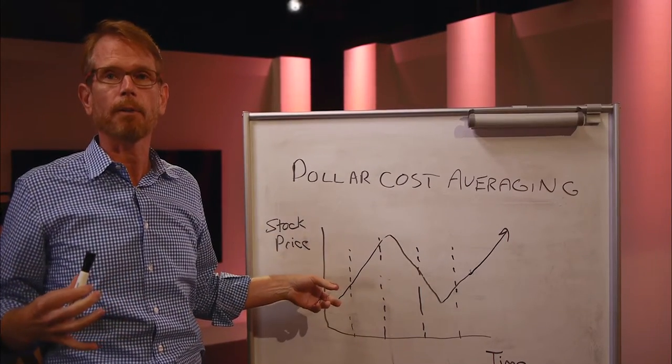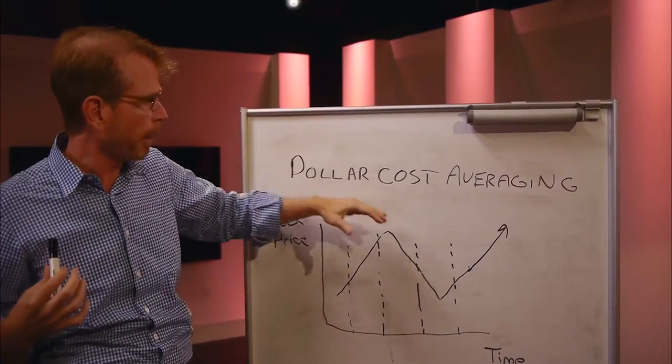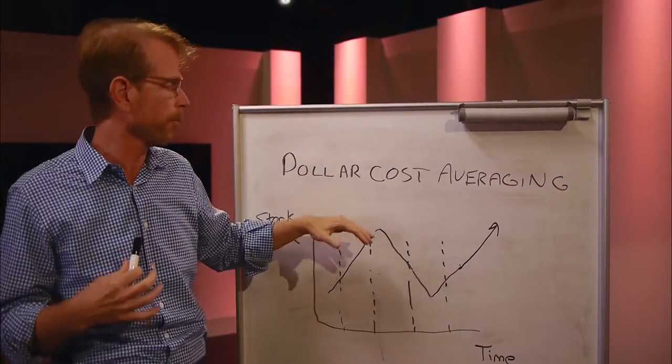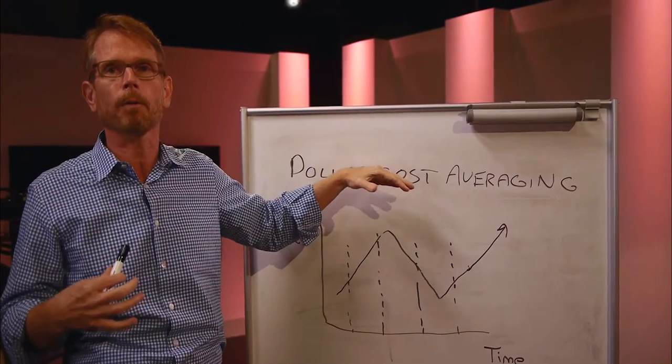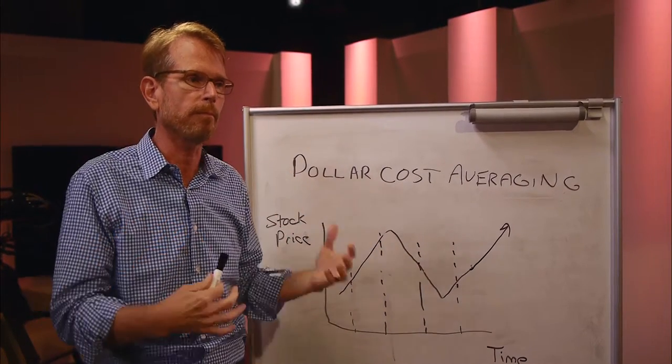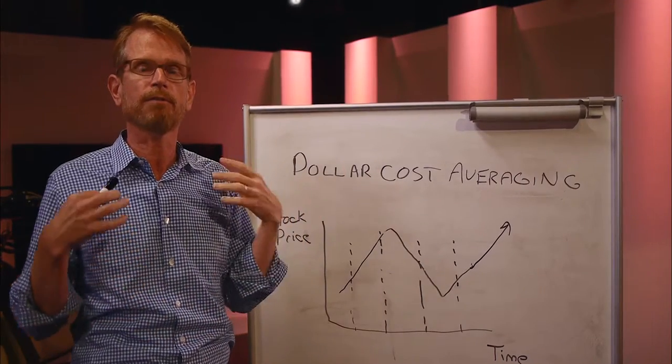The psychology of most people is that when stock prices are really high, you think it's going to go even higher, so you end up buying more when stock prices are high. And then when stock prices go down, you don't want to buy stock. So what dollar cost averaging does is it forces you to buy stock on a regular basis.